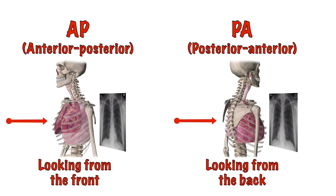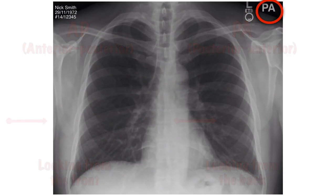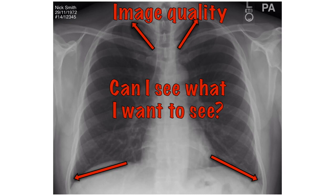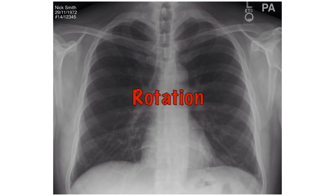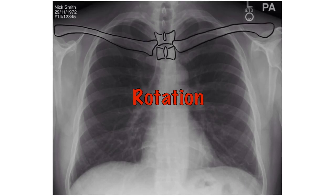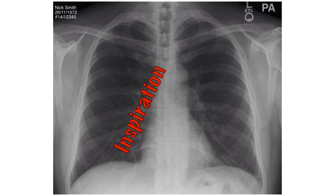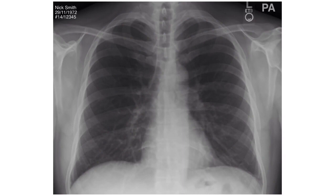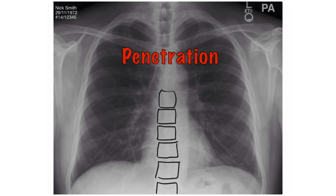The orientation of the film — is it PA or AP? Often useful information may be written on the image. In terms of image quality, ask yourself if you can see everything you need in the picture, then check three aspects using the mnemonic RIP: R is rotation — the spinous process should be at the midpoint between the medial ends of the clavicles; I is inspiration — five to seven ribs should be visible anteriorly; P is penetration — is the spine visible behind the heart?